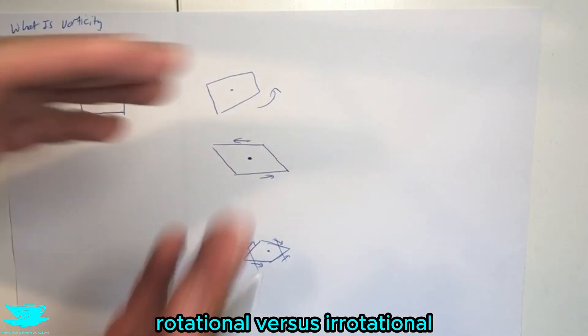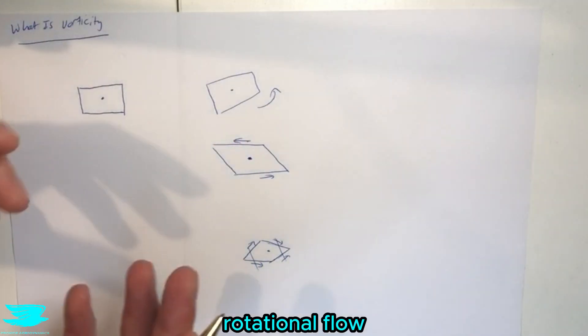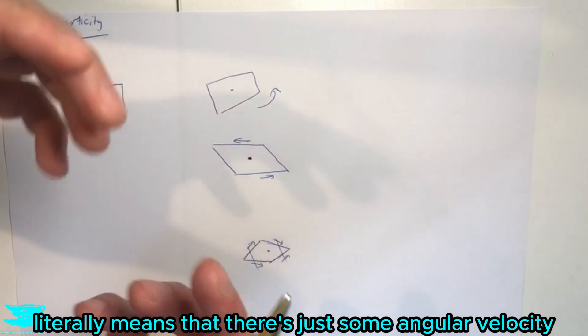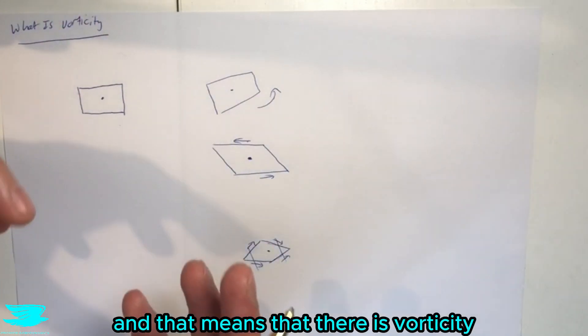So that is very important, this distinction, rotational versus irrotational. Rotational flow literally means that there's just some angular flow somewhere in the flow, and that means that there is vorticity.